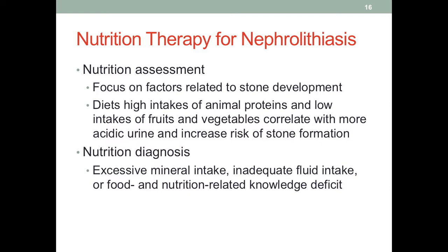We already mentioned a few factors, such as hydration status, urinary pH value, and the flow of urine. It has been shown that diets with high intake of animal proteins and low intakes of fruit and vegetables are connected with more acidic urine. We mentioned acidic urine particularly favors the development of a certain type of kidney stone; therefore, this kind of diet increases the risk for stone formation.